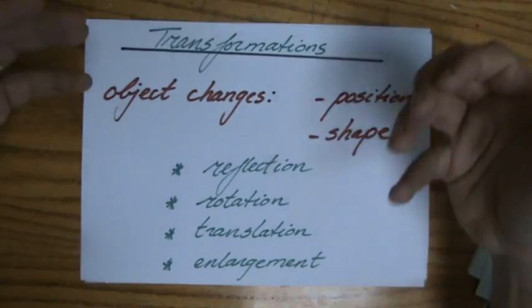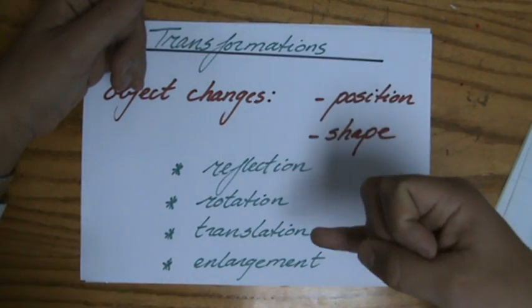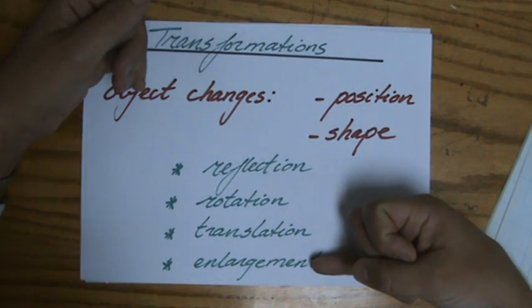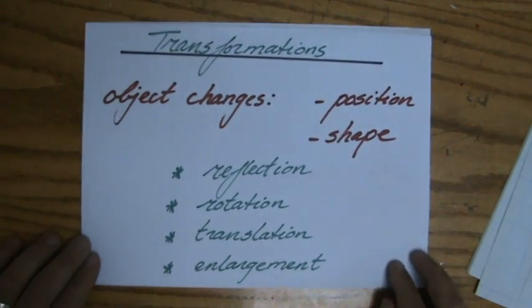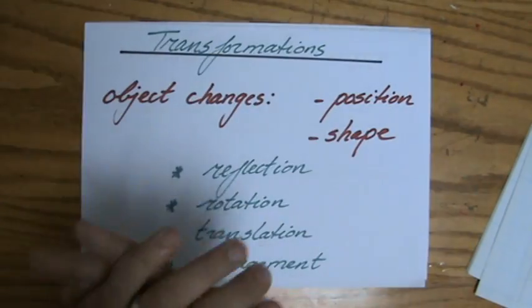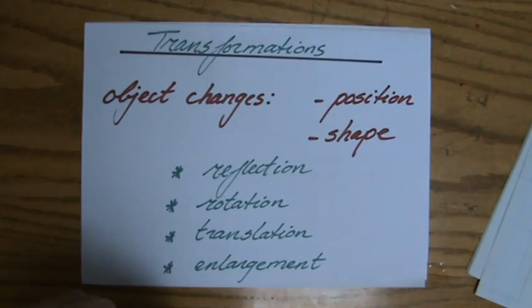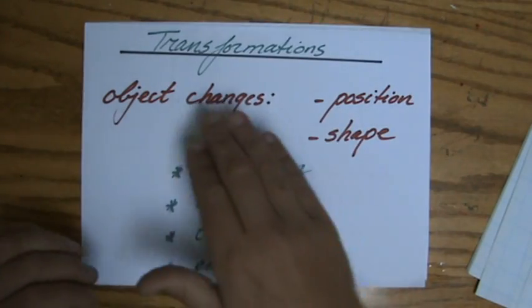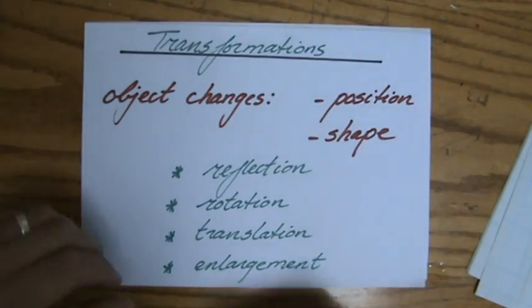And in general we have four of them you need to know: reflections, rotation, translation, and enlargement. So we are going to be doing all four of those and I will be talking a lot around it. So hopefully you will have a look at all the videos about transformations. Nothing more than an object changing either position or shape. Sometimes both.